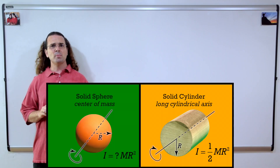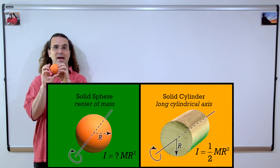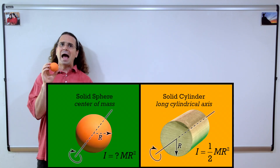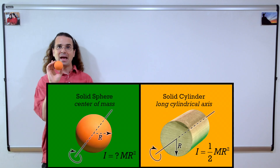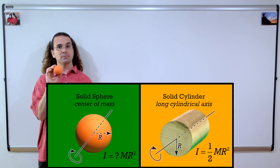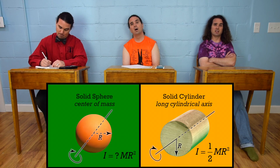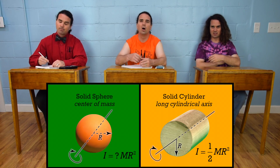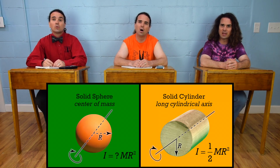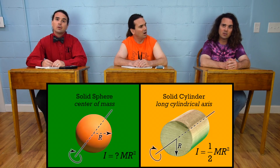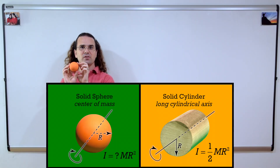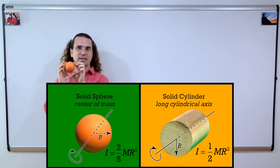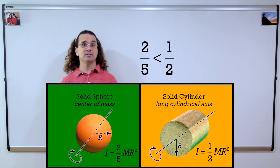Let's move on to the moment of inertia of a solid sphere about its center of mass — a lacrosse ball, for example. Bo, how does the fraction for the solid sphere compare to the fraction for a solid cylinder? Because the sphere is solid, a larger percentage of its mass is located closer to its axis of rotation than for a solid cylinder. So the fraction for the solid sphere should be less than one-half. The moment of inertia of a solid sphere about its center of mass equals two-fifths MR². Two-fifths is less than one-half, so that is correct.